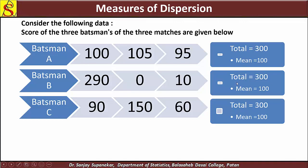The key concepts here are consistency, average, dispersion, and variation. The variation and dispersion will be measured in the same way, and this is what the measures of dispersion capture.